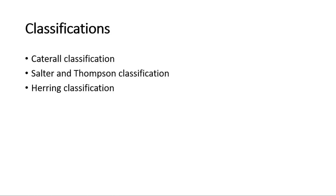There are a few classifications for this disease. The Catterall classification is applied during the fragmentation stage and is based on the amount of epiphysis involvement. The Salter and Thompson classification focuses on the extent of the superolateral dome of the femoral head affected by subchondral fracture. The Herring classification is the most commonly used classification.